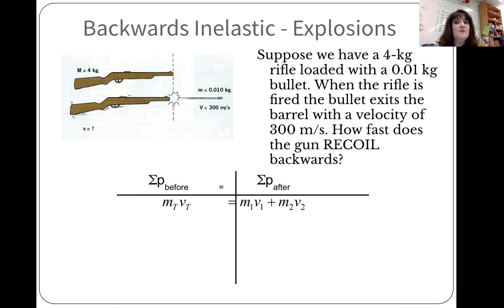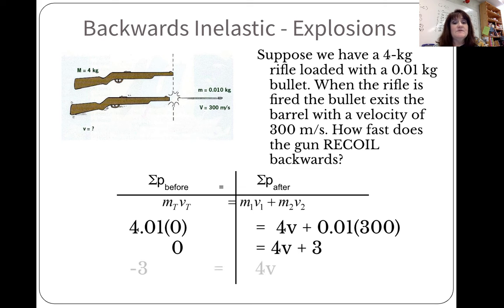Here's an example. Suppose we have a 4 kilogram rifle loaded with a .01 kilogram bullet. When the rifle is fired, the bullet exits the barrel with a velocity of 300 meters per second. How fast does the gun recoil backwards? So we start with a total mass of 4.01, the bullet and the gun together. And it's generally not moving. Then, afterwards, the gun is 4, and its velocity we don't know. The bullet is .01 and 300 meters per second. That means that the total momentum before is equal to zero, and after is 4V plus 3. Subtract 3 from both sides, divide by 4, and the velocity of the recoil is negative .75 meters per second.